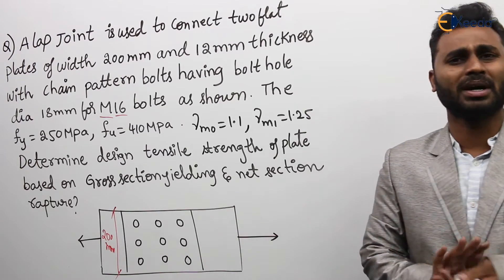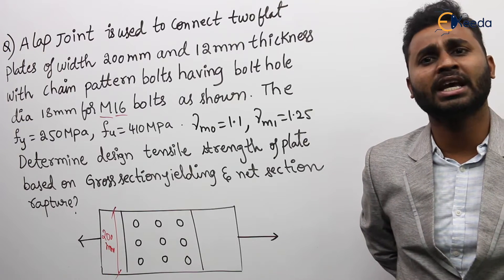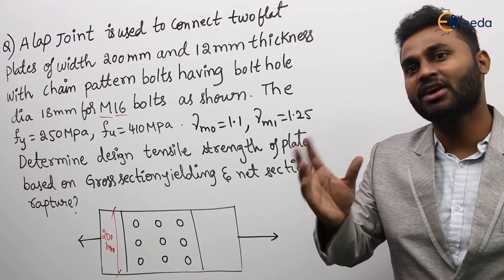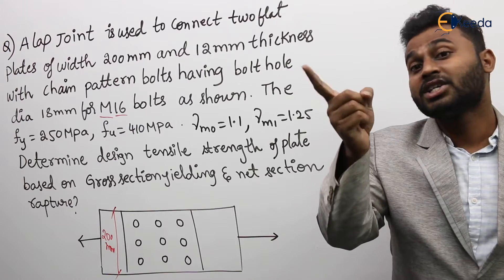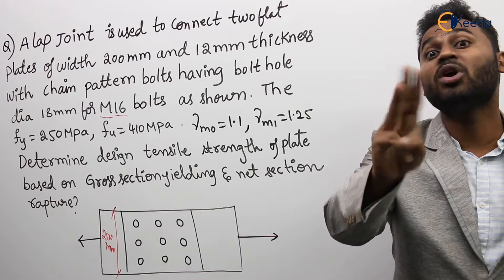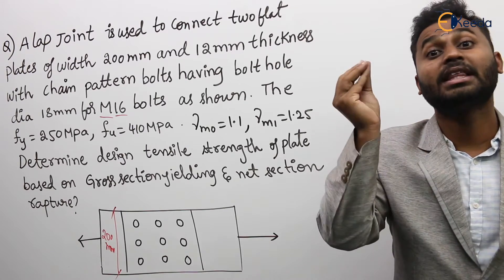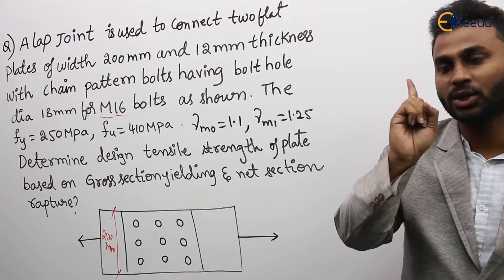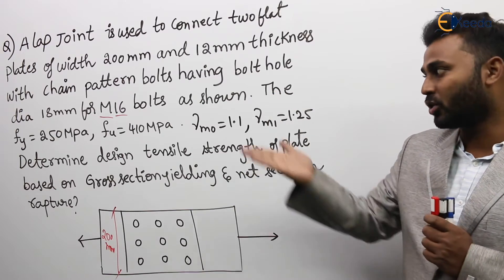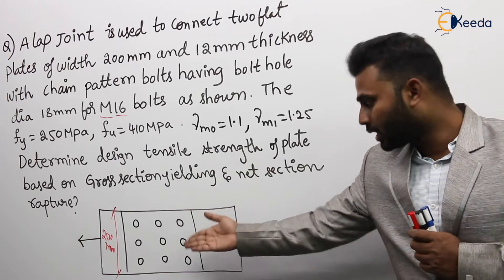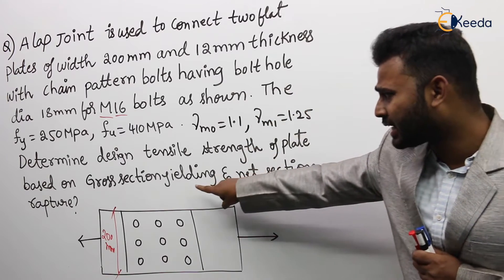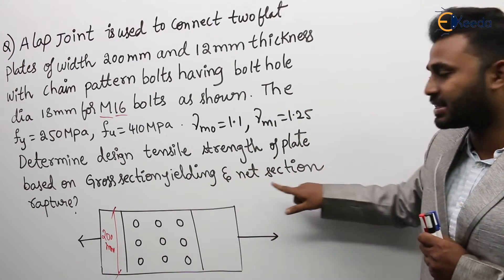When discussing bolted connections previously, we covered design shear strength of bolt, design bearing strength of bolt and plate, and design tensile strength of bolt — but not the design tensile strength of the plate. I mentioned I would explain it during the design of tension member topic. Now I'm going to show through this problem how to calculate the design tensile strength of a plate — based on cross-section yielding and net section rupture.